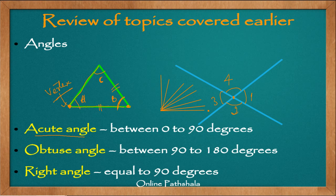The moment we have a 90-degree angle, we call it a right angle. A right angle is an angle equal to 90 degrees, as shown here. Any angle that is less than 90 degrees is an acute angle.